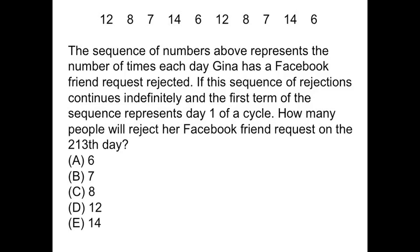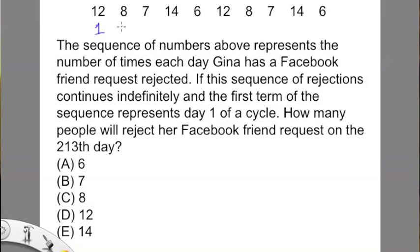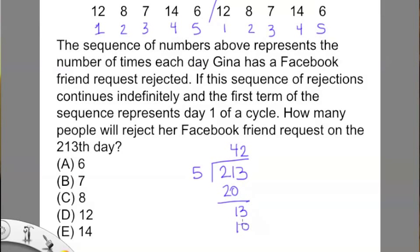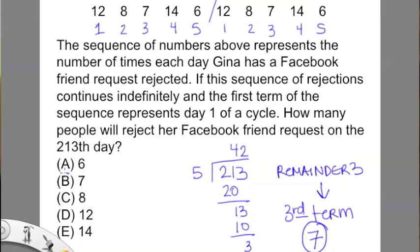Let's try one last problem to make sure you really got it. The sequence of numbers represents the number of times each day Gina has a Facebook friend request rejected — pure fiction, absolutely pure fiction. If this sequence of rejections continues indefinitely and the first term represents day 1 of a cycle, how many people will reject her Facebook friend request on the 213th day? Step 1: the first 6 to 8 terms — they've already written out 10, and we can see there's a repeating pattern of 5 terms. Dividing 213 by 5 gives us 42 with a remainder of 3, which means our answer is the third term of the sequence, or 7 — choice B.